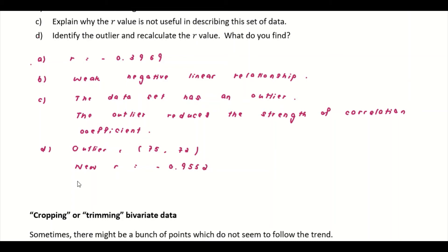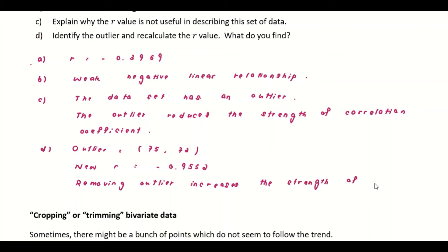So what do you find? You can write that removing the outlier increases the strength of R, or increases the value of R, indicating a strong negative linear relationship.